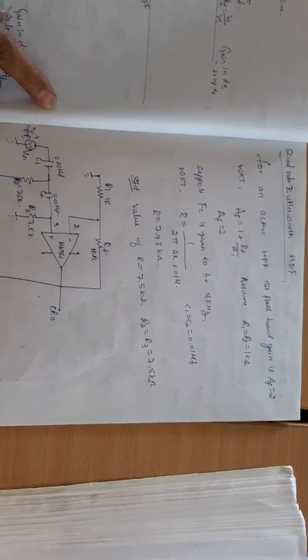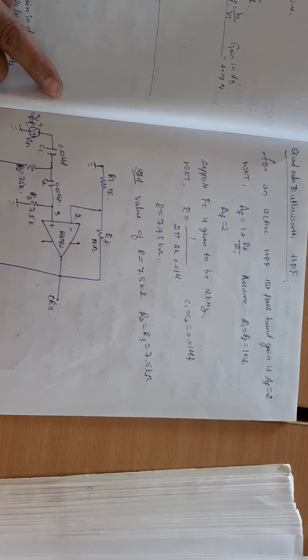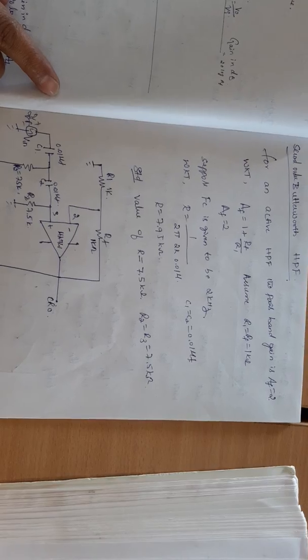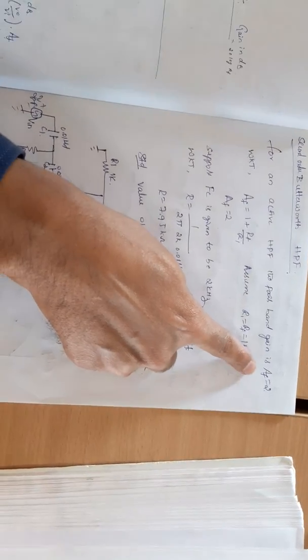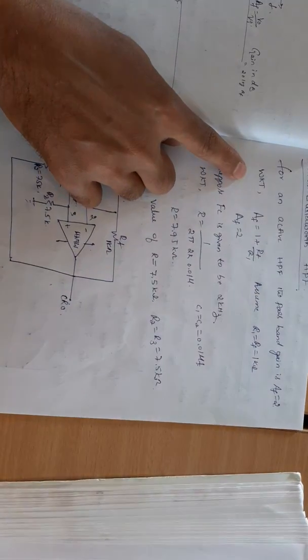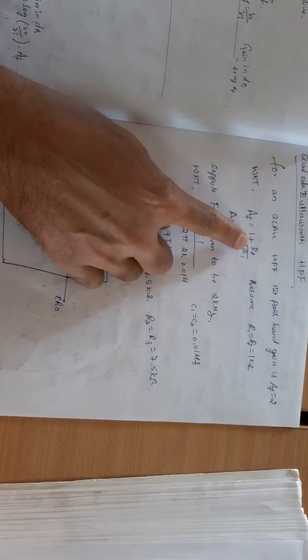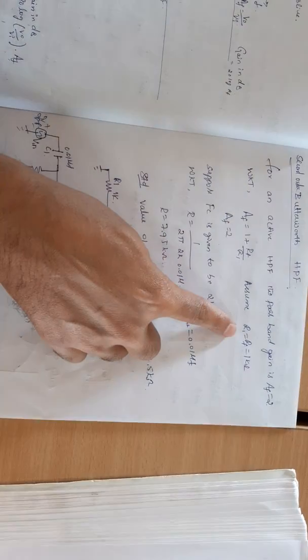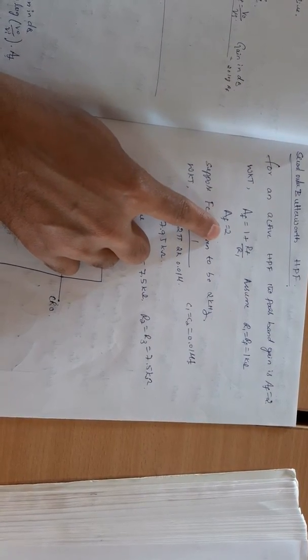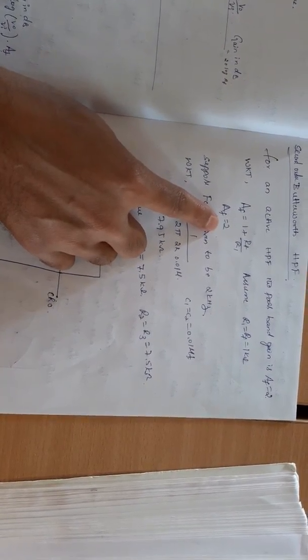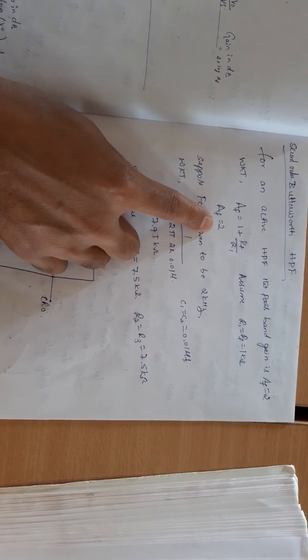Hello everyone, now we will see how to design a second order Butterworth high pass filter. We are taking passband gain Af equal to 2, which means forward gain is 2. We have the formula for non-inverting amplifier to calculate the forward gain: Af = 1 + Rf/R1. We are assuming R1 and Rf as 1 kilohm, so forward gain is 2. This means whatever input we give, the output will be twice the input signal.